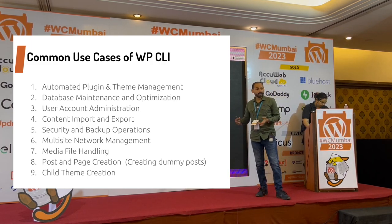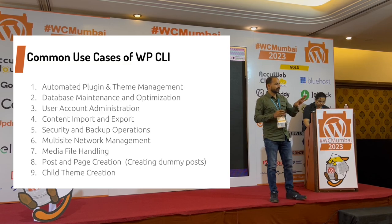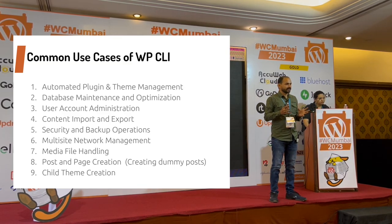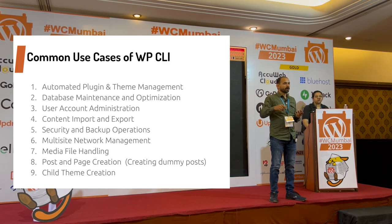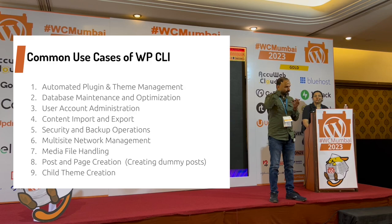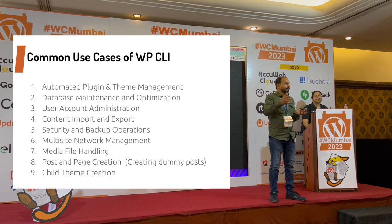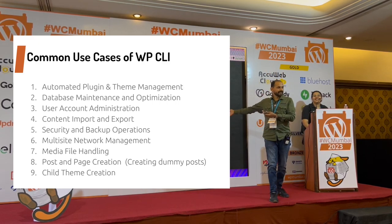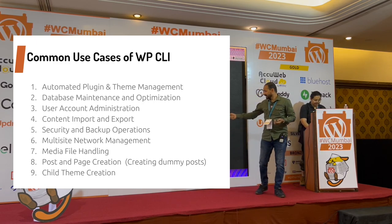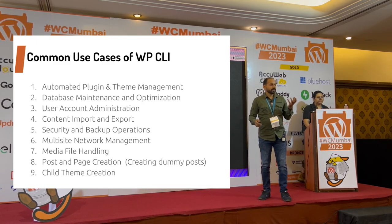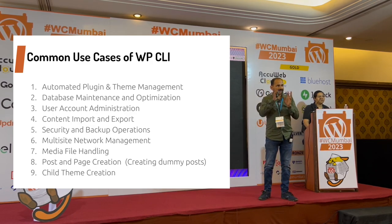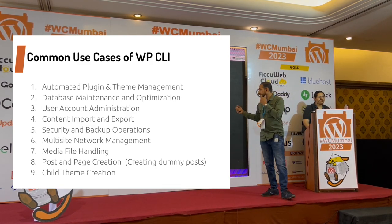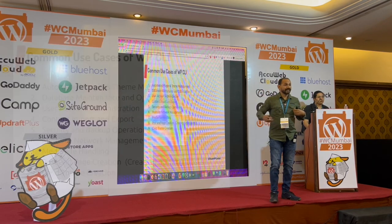You can also do post and page creation — like creating dummy posts. If you set up WordPress and need a hundred dummy posts for testing, doing it manually through the backend — clicking add, typing, publishing — would take half an hour. With WP-CLI, it can be done in seconds. Then child theme creation, scaffolding plugin code — these are the common use cases. Let's move to something more advanced.